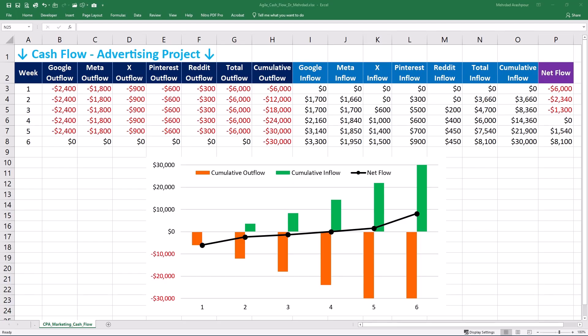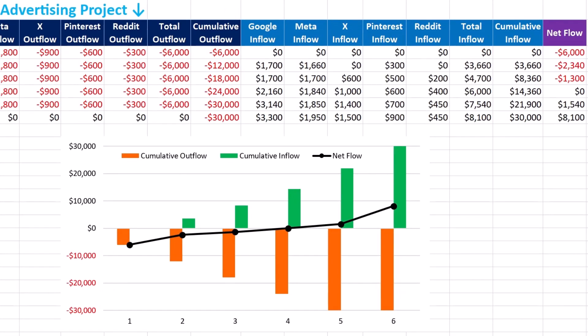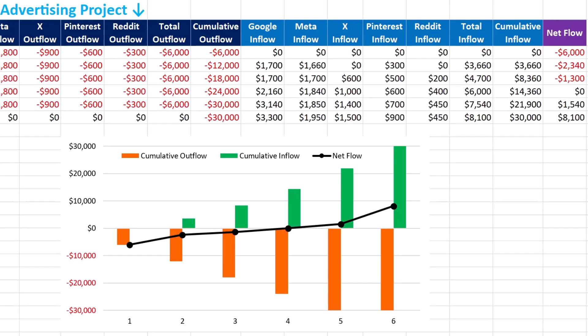Not all advertising platforms generate revenue at the same speed. Google and Meta start producing inflows as early as week 2, reflecting their relatively short conversion cycles, while X and Reddit see their first meaningful revenue in week 3. Advertisers should structure budgets to balance immediate-return platforms like Google and Meta with slower but high-value channels including Reddit and X. A well-optimized mix ensures steady cash flow rather than relying solely on fast-converting traffic, which may have higher competition and cost.